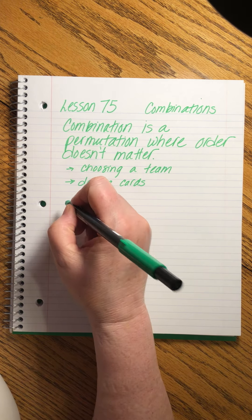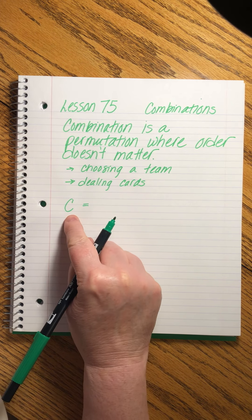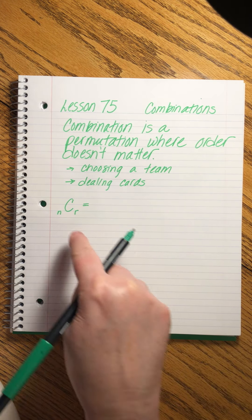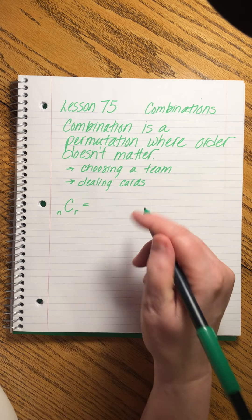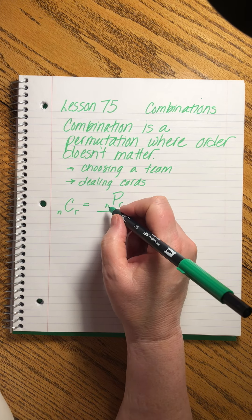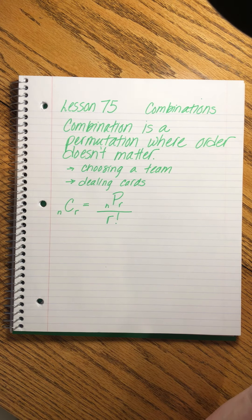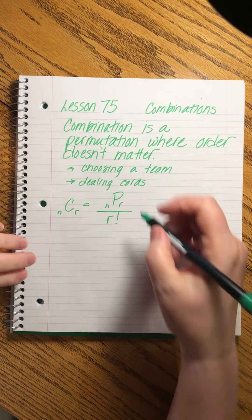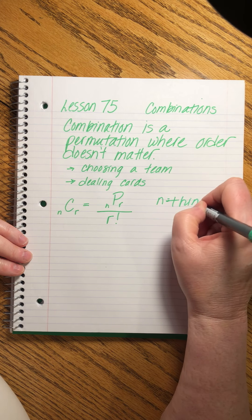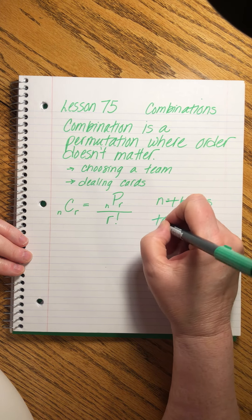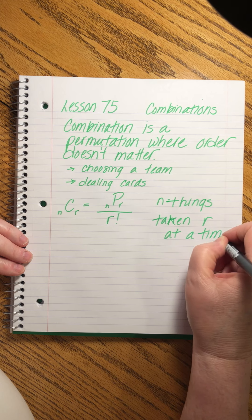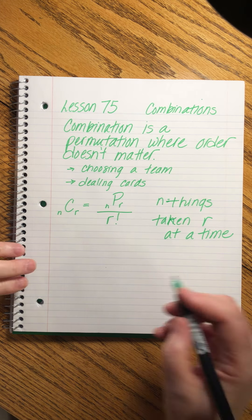Here's the formula. Super easy. To find the combination of n things taken r at a time, we find the permutation of n things taken r at a time and we divide by the at a time number, r factorial.